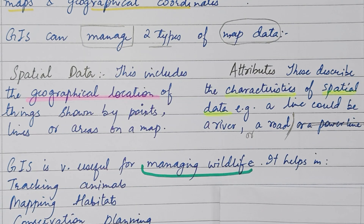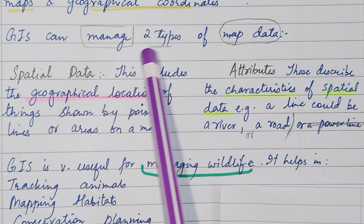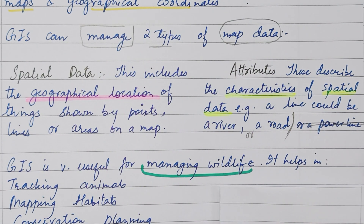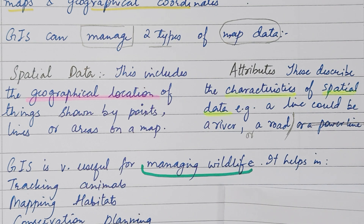GIS can manage two types of map data. One is spatial data, and the other is attributes.